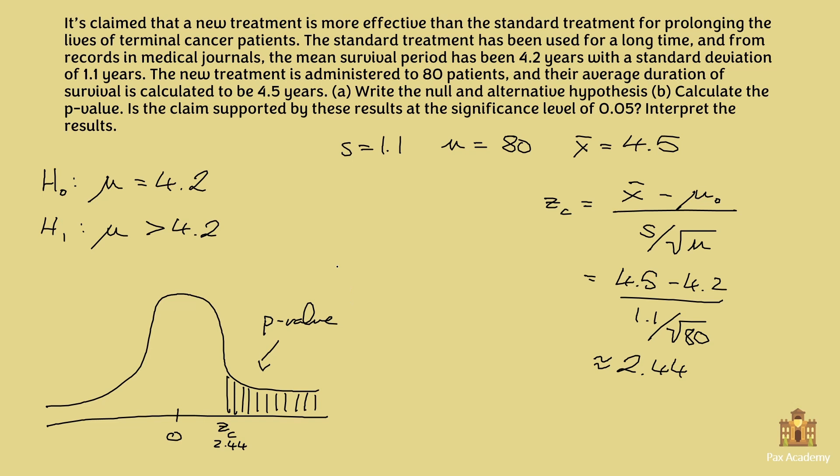So if we go back here, we now know that the p-value is 0.00734. So now we need to decide if it's higher or lower than the significance level. So as we can see, when we compare it to 0.05, it is clearly lower than 0.05. Because 0 is lower than 5. So now that we know that the p-value is lower than the significance level, we conclude that we reject the null hypothesis. So this is our conclusion. We reject the null hypothesis that the mu is 4.2.